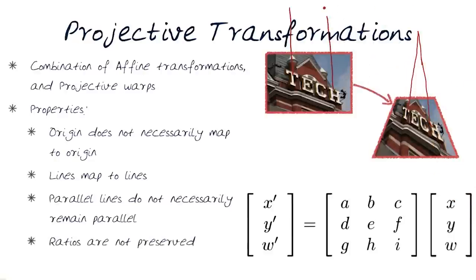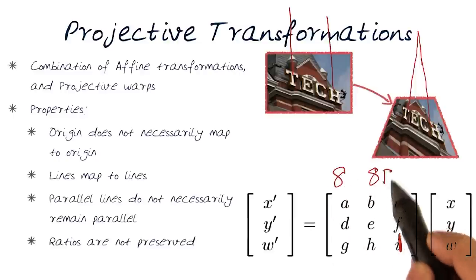And of course, ratios are not preserved in this one either. Here, of course, we have—what do you think, nine parameters? Nah, remember, I always said this will convert back to one. So in essence, we have eight parameters, which basically means we have eight degrees of freedom.